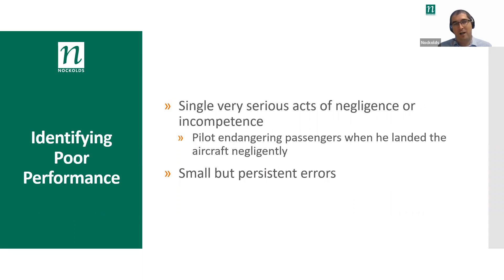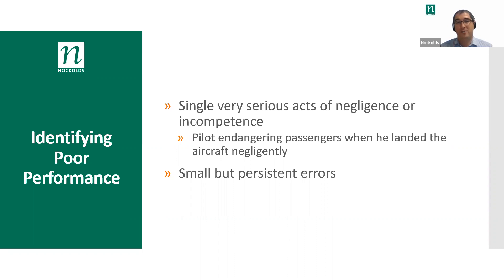When you're identifying poor performance, that can break down into two key components. There are the one-off, extremely serious acts of negligence or incompetence — an example being a pilot endangering passengers when he landed the aircraft negligently. Those sorts of scenarios often cross over with gross misconduct type dismissals and can result in dismissal in the first instance straight away, but they are rare.